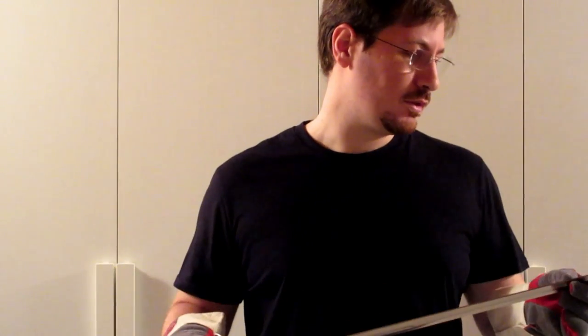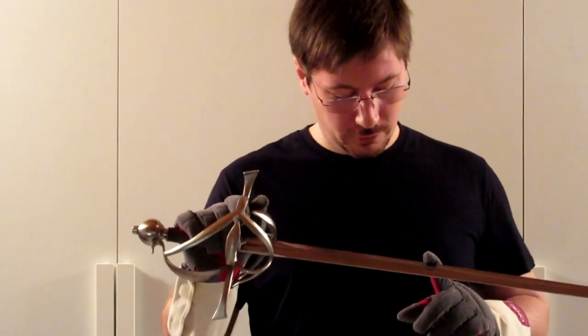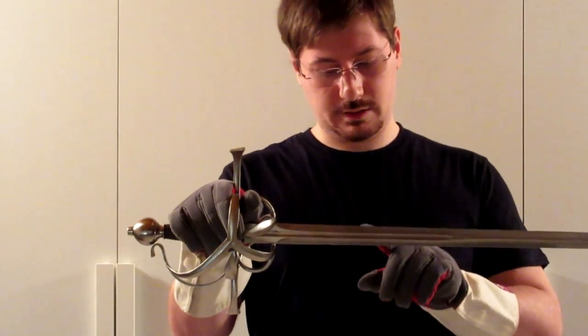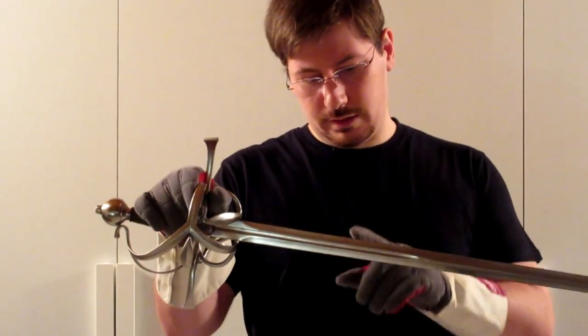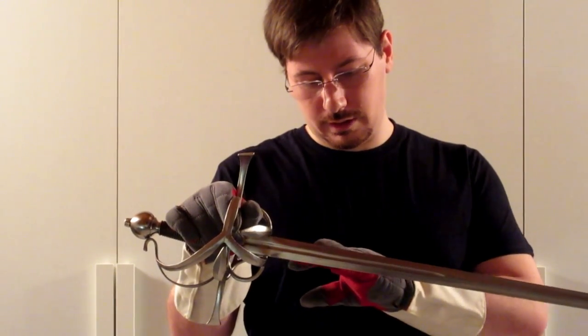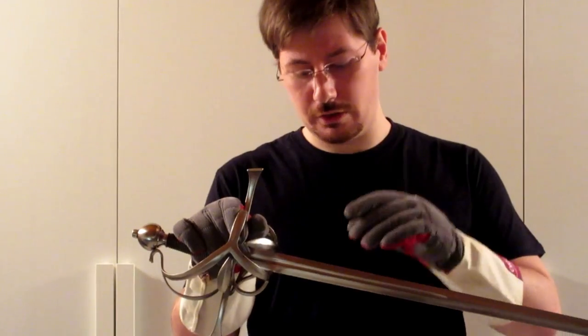Another thing I forgot. The blade section is, in the foible, an hexagonal section, but here in the forte the section is also hollow ground.